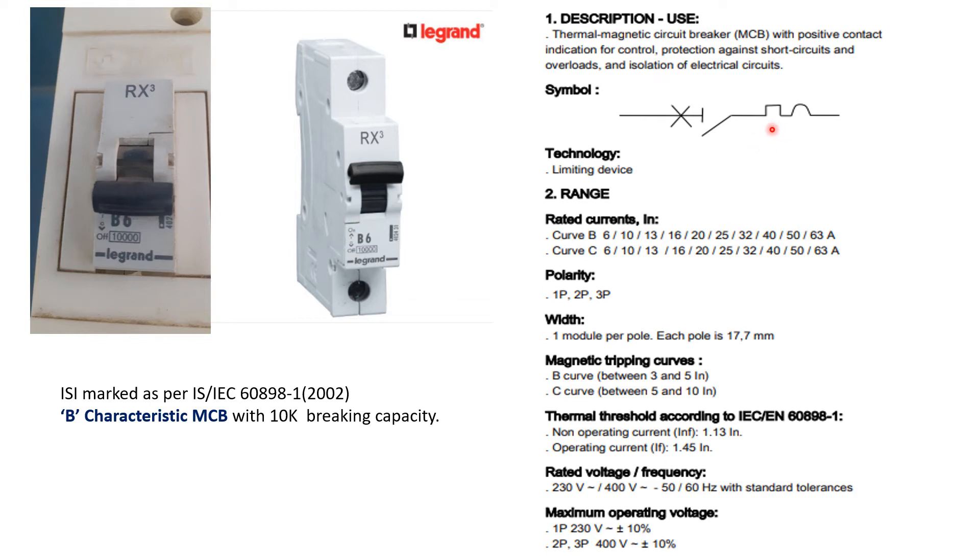In this particular symbol you will find this pulse state wave shape, this pulse indicates you that this MCB gives you protection from short circuit and overload also. So short circuit and overload both type of protections are getting provided by this MCB.